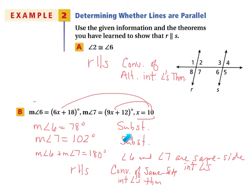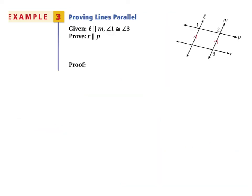I'm writing all these definitions and reasons, but if the problem doesn't ask you to do a two-column proof, you don't need these — you can just do the work and state whether the lines are parallel or not. I'm including all these reasons just to help explain why we're doing each step. Now in example 3, we are going to have a formal proof: proving lines parallel.